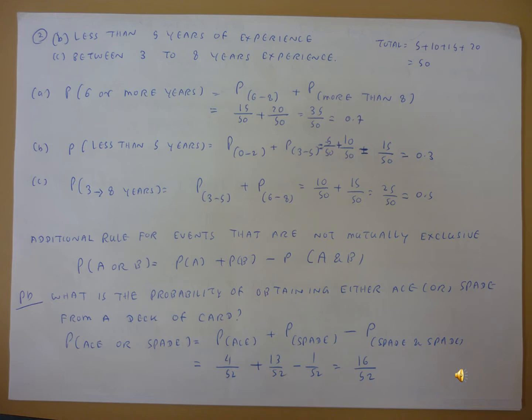Similarly, more than eight years experience wearers are 20 divided by total number 50. So 15 by 50 plus 20 by 50 equals 35 by 50 or 0.7. The probability of six or more years experience wearers is 0.7. This is the answer for part A.